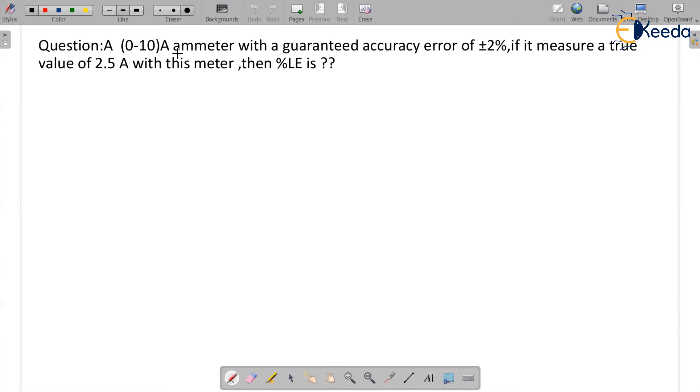A 0 to 10 amps ammeter with a guaranteed accuracy error of plus or minus 2 percent. If it measures a true value of 2.5 amps with this meter, then what is the percentage limiting error?